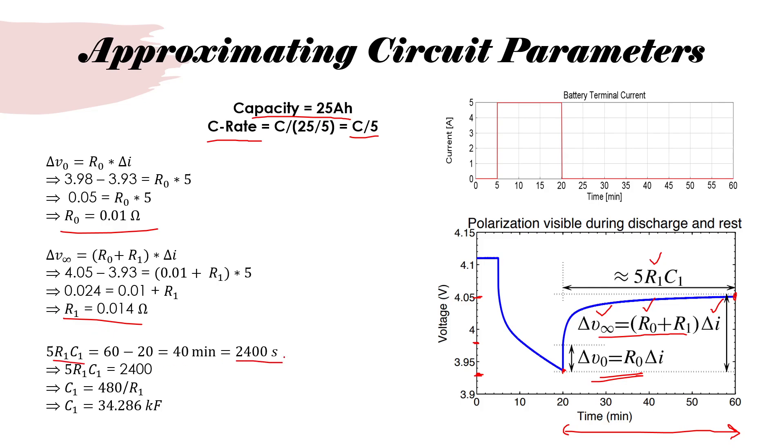Now, R and C are in ohm and farad. Ohm times farad will give you time in seconds. We need to convert 40 minutes to seconds which is 2400. Finally, you end up getting C1 equals to 34.286 kF. This is how you can estimate circuit parameters in a Thevenin model.